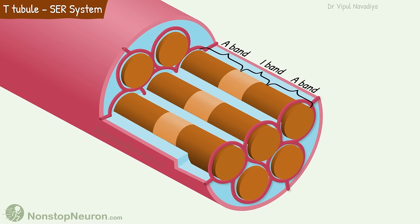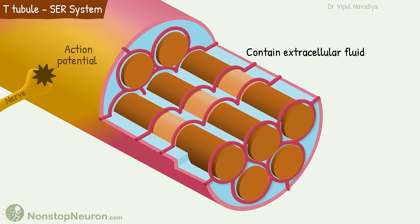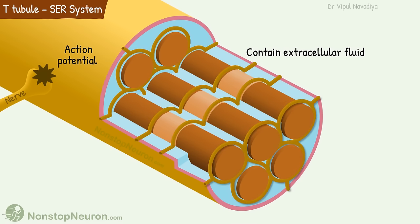Remember the bands of myofibrils — T-tubules pass near the junction of A and I bands. So each sarcomere is surrounded by two T-tubules. As they are invaginations of the cell membrane, they contain extracellular fluid. When the cell is stimulated at the neuromuscular junction, an action potential is generated and spreads along the membrane. Along the T-tubule, it penetrates deep into the cell to reach all the myofibrils.